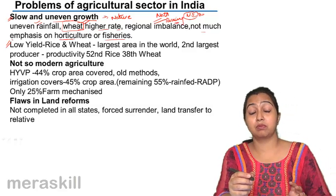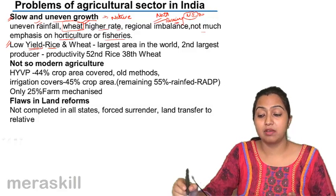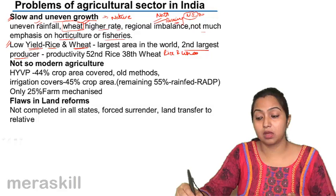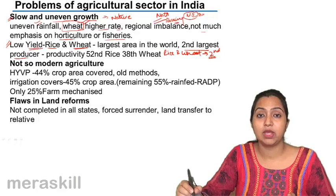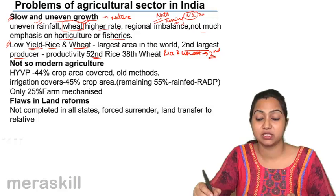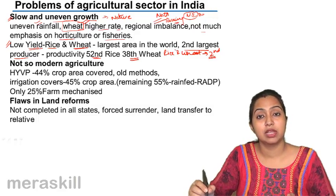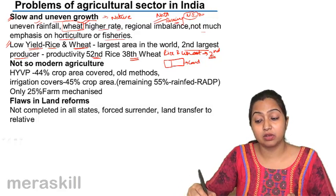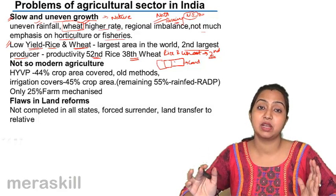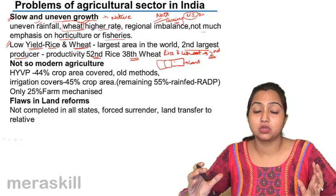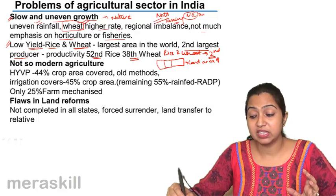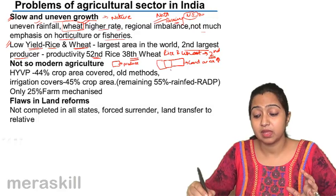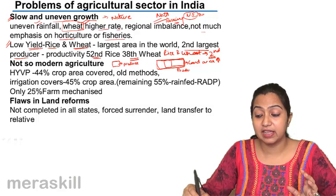The second most important problem is low yield. We are the second largest producer of wheat and rice, but when we talk about yield — per hectare production — we stand 52nd in rice and 38th in wheat. The land we are using is too much in comparison to other countries. Other countries use smaller areas to produce the same amount, while we use larger areas, so our productivity is very less.